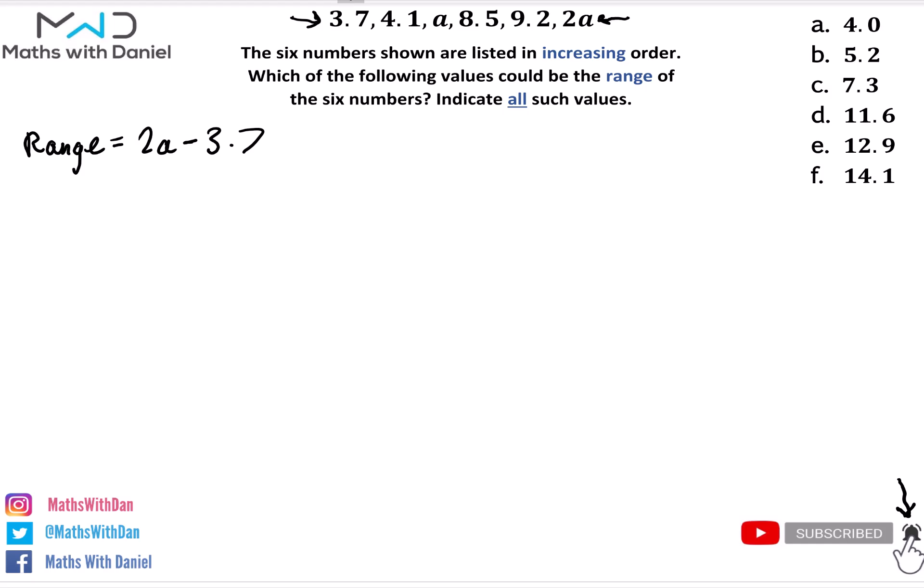Now is it possible to find out what values a could take? If we can, then we can answer the question. Let's look back at our set of numbers. We can see that the number a is lodged in between 4.1 and 8.5. Since it's in increasing order, we know that a has to be in between these two numbers. So from that information we could write an inequality. We could say that 4.1 is less than a, and a is less than 8.5.